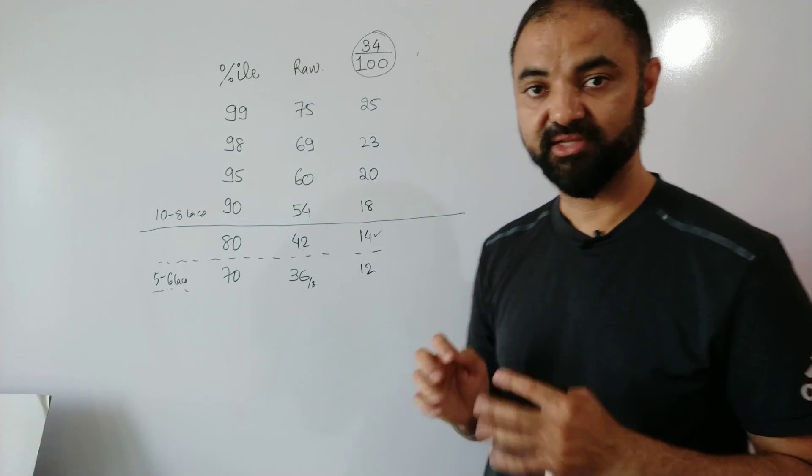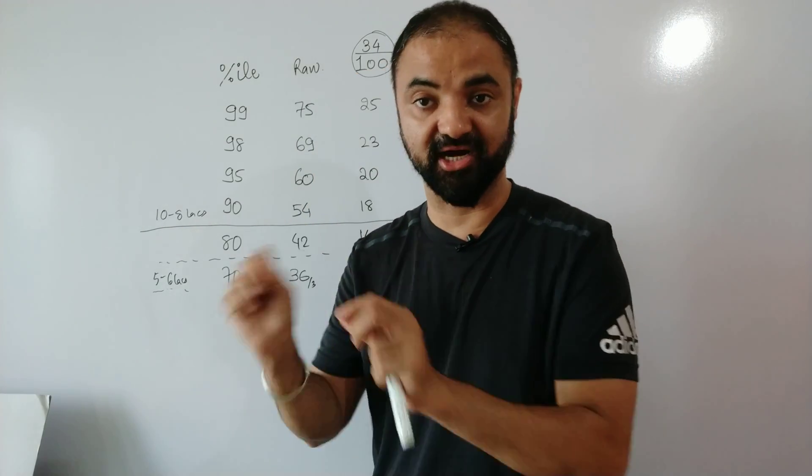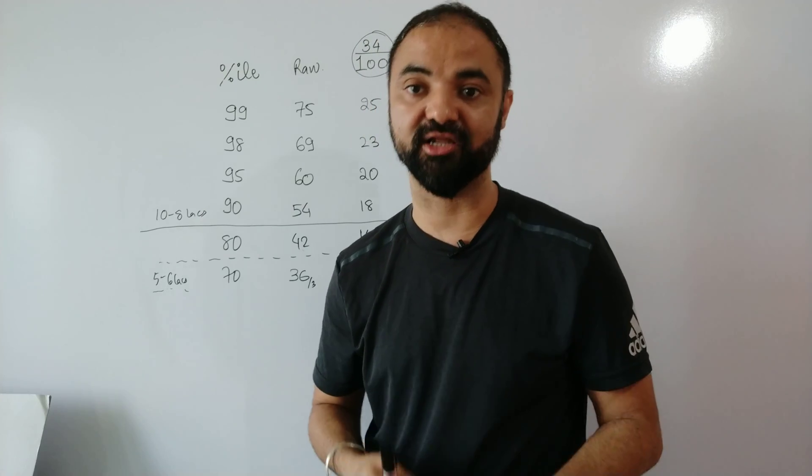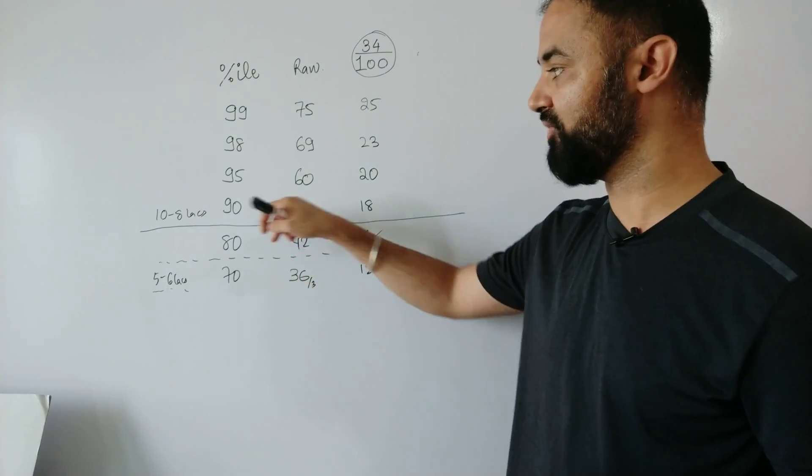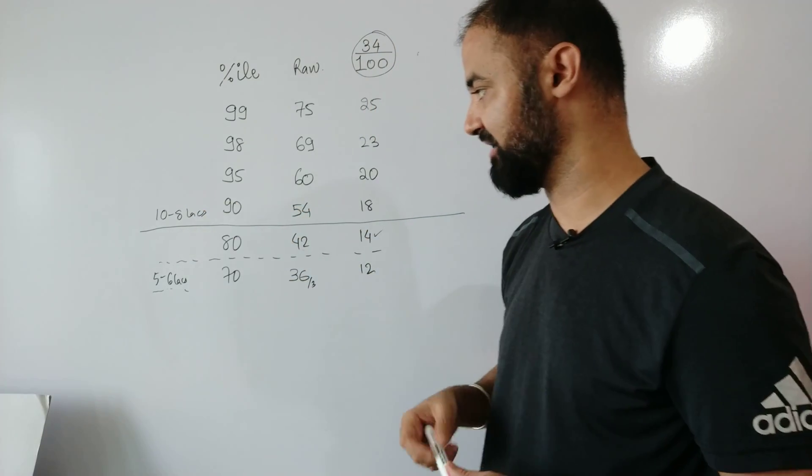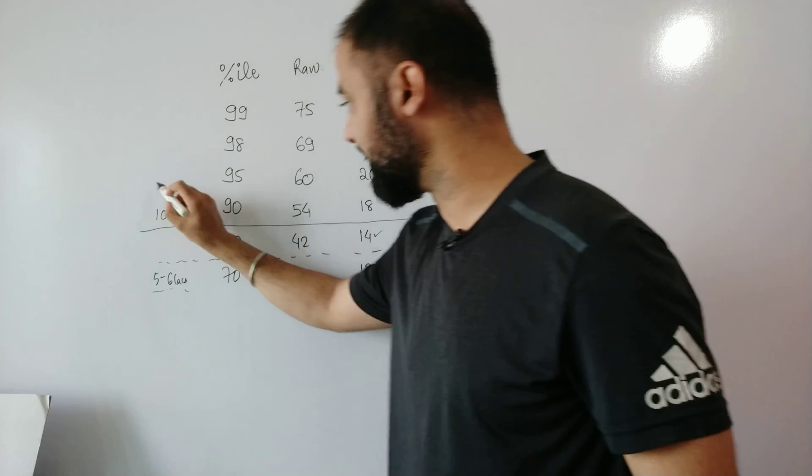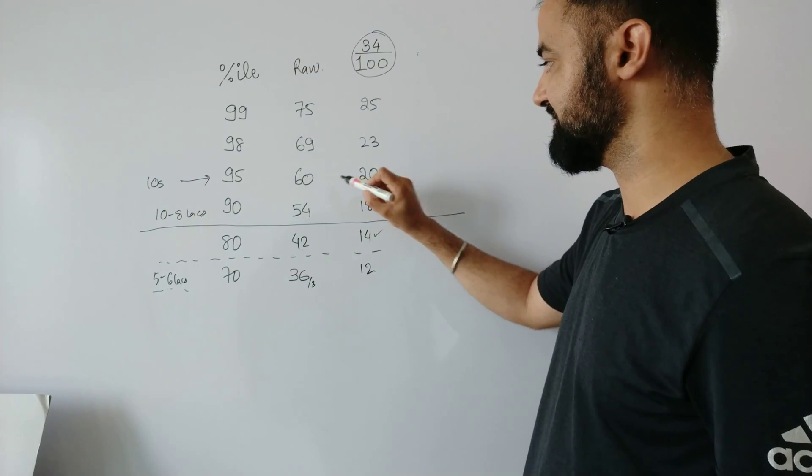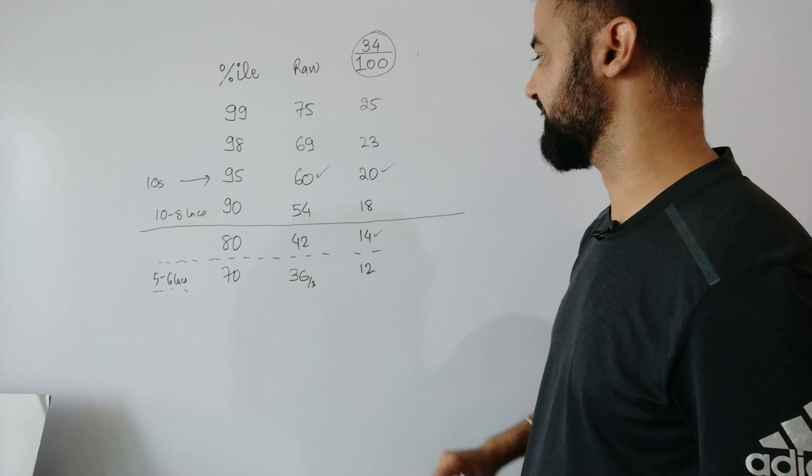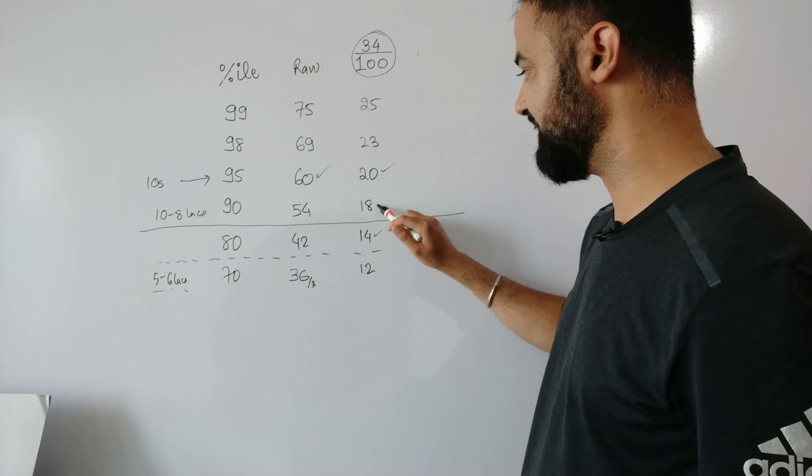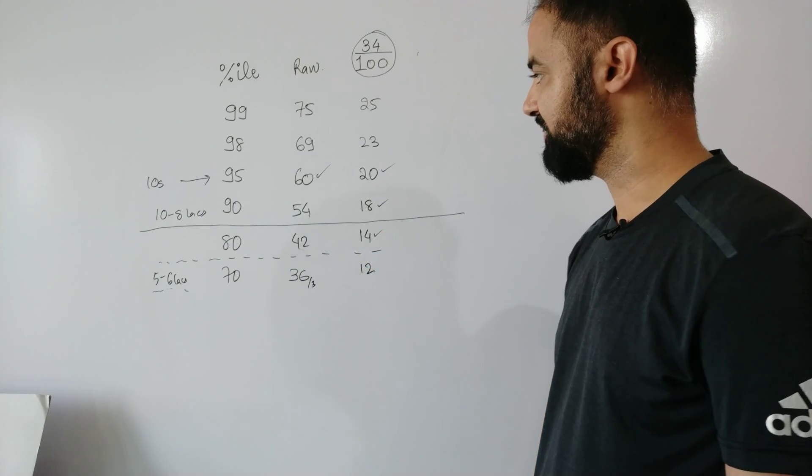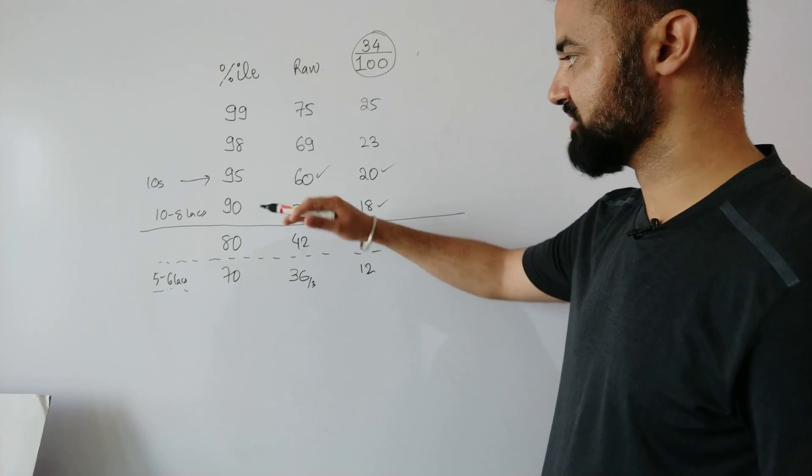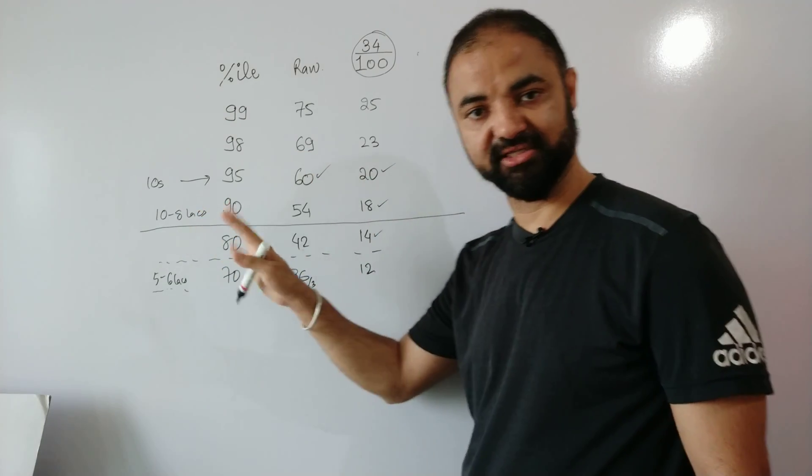You can expect all IIM calls provided you've cleared sectional cutoff and have good academic record also. And for engineers you will start getting a few calls at 90 percentile. For 10 plus IIM calls, 95 percentile is required, which is 20 questions correct. And for 90 percentile is 18 questions correct for IIM calls and converting all the other decent colleges.